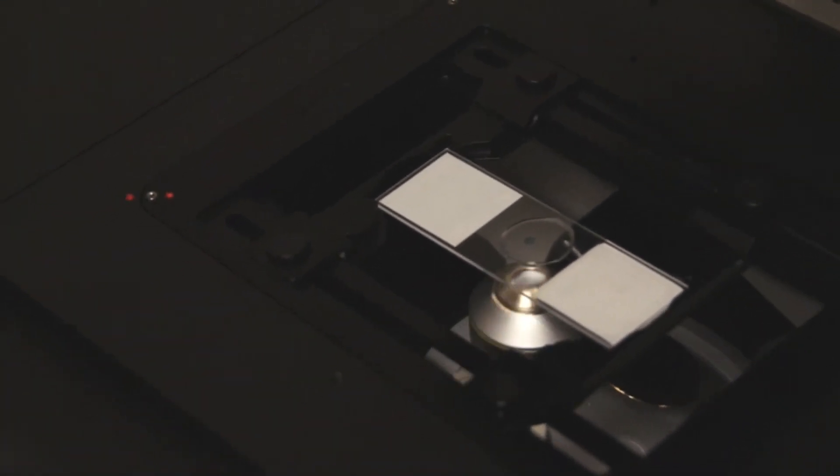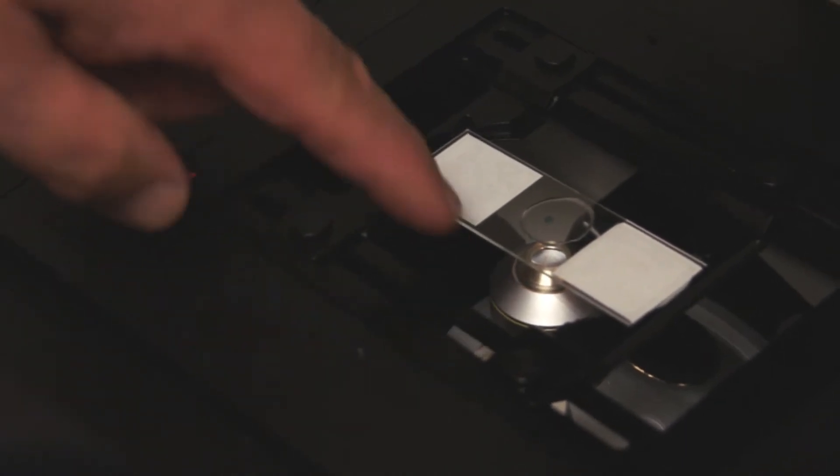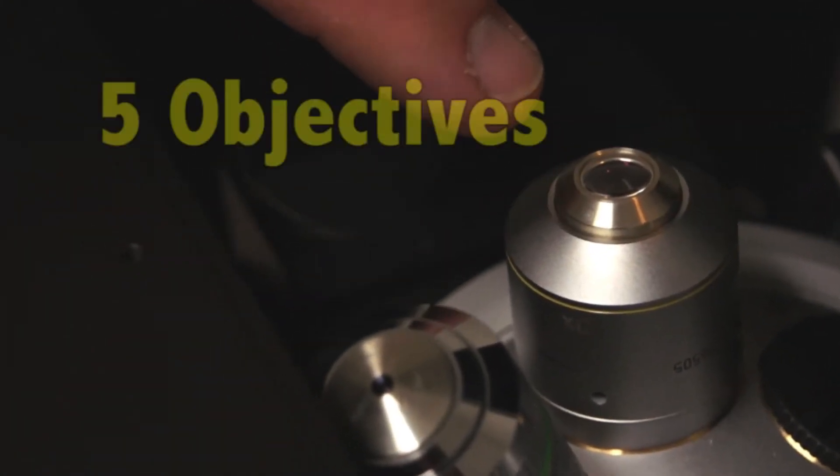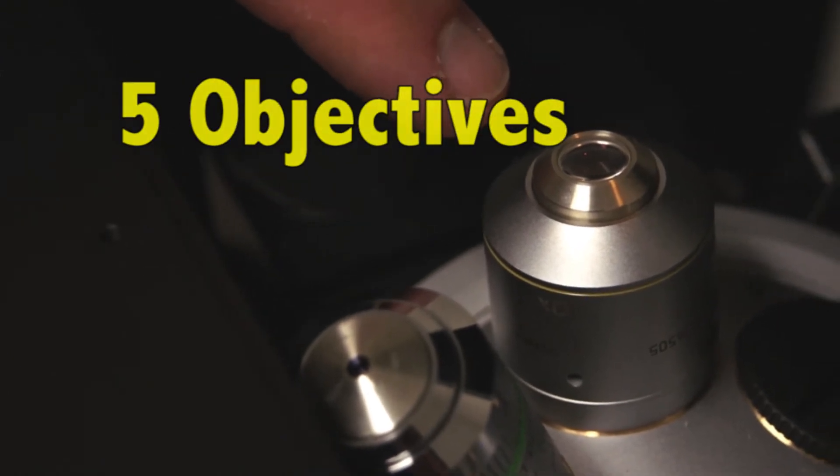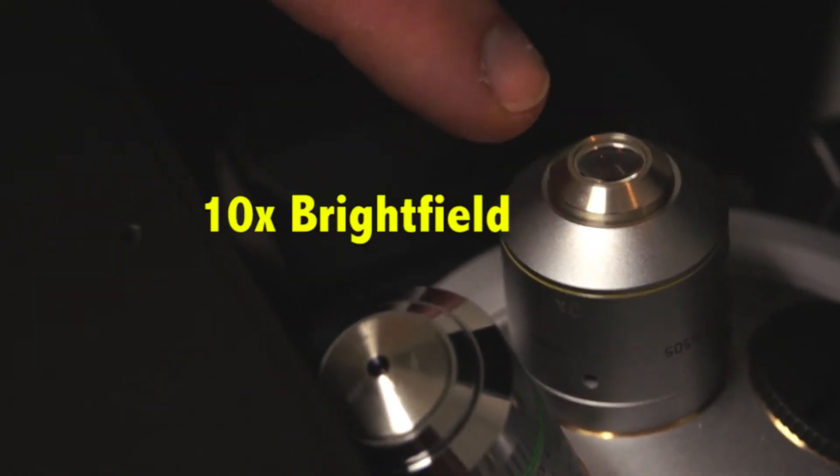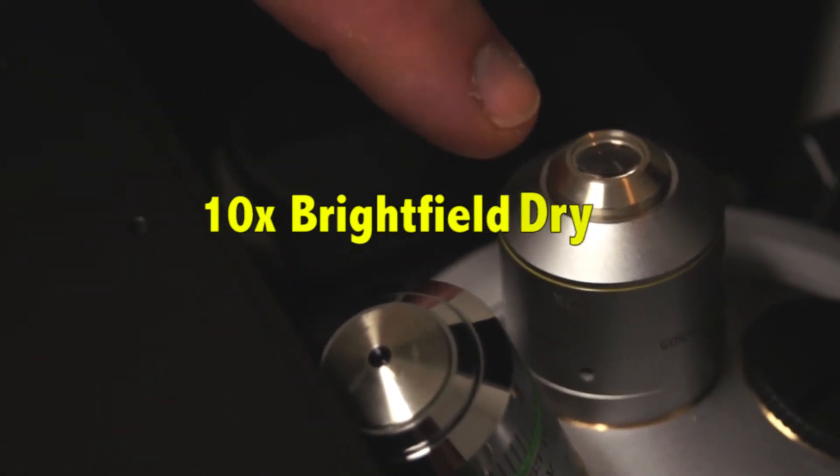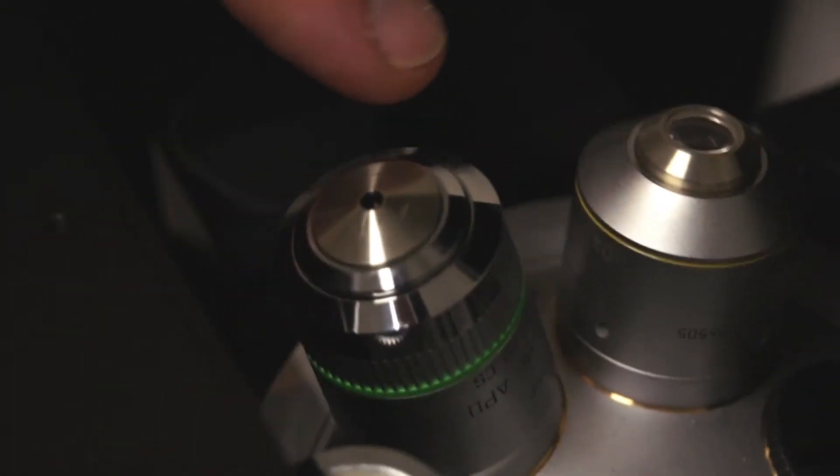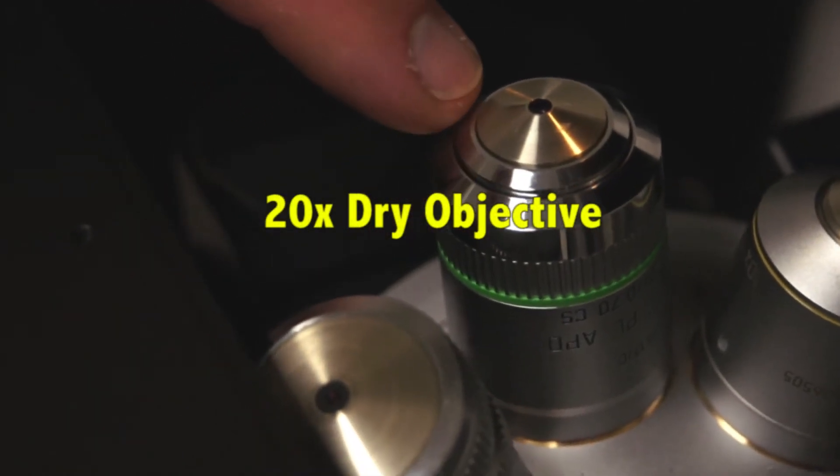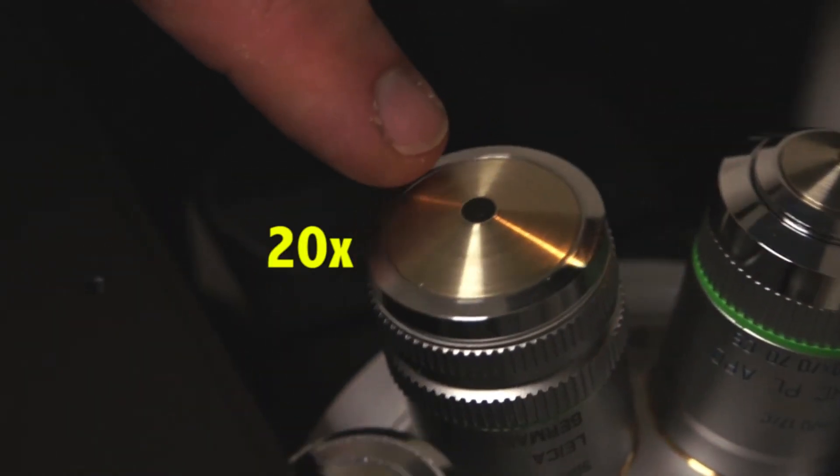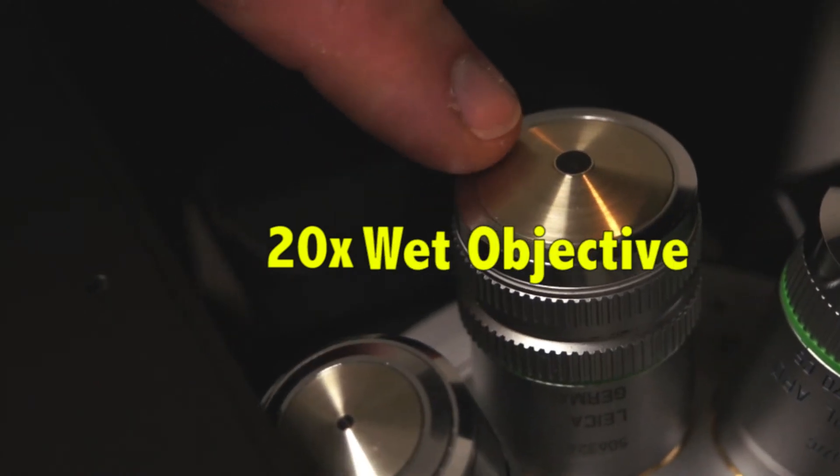Then you are free to dial the nose piece and bring the first objective, a 10x objective, into view. The Leica Confocal Microscope has a series of five objectives. The lowest power is a 10x bright field objective and it is a dry objective. The second objective is a 20x dry objective. The third objective is a 20x, but this is a wet objective.